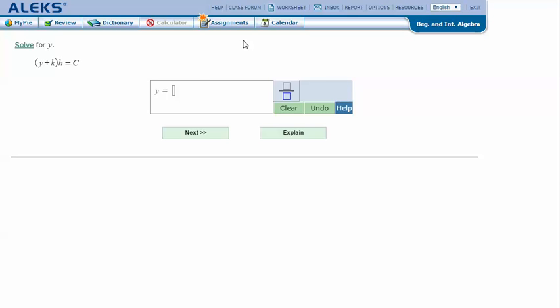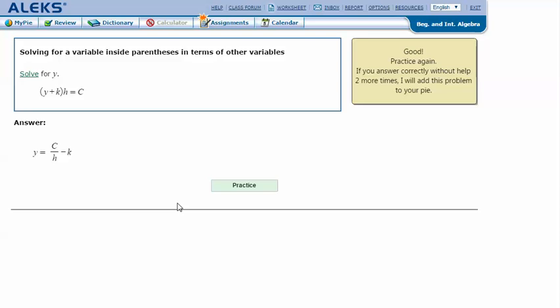In my ALEKS screen, type in the answer that I got in my notes. C over h minus k. And click next. And it says that I got the correct answer. Thanks for watching.